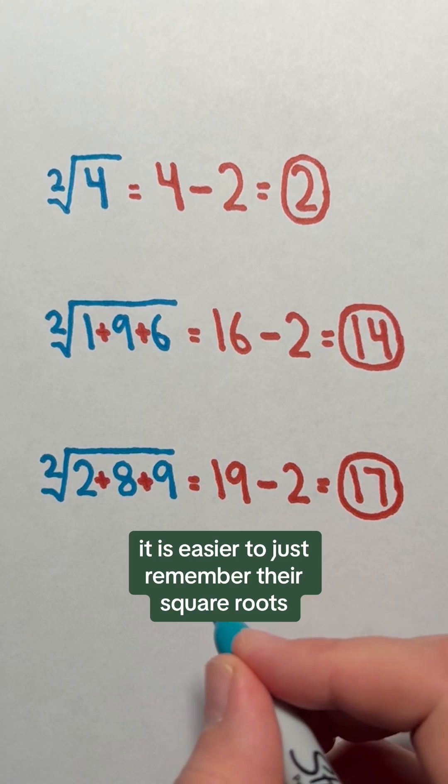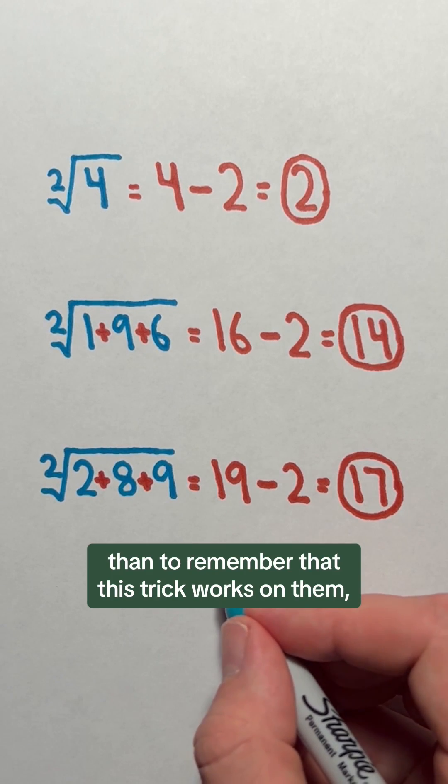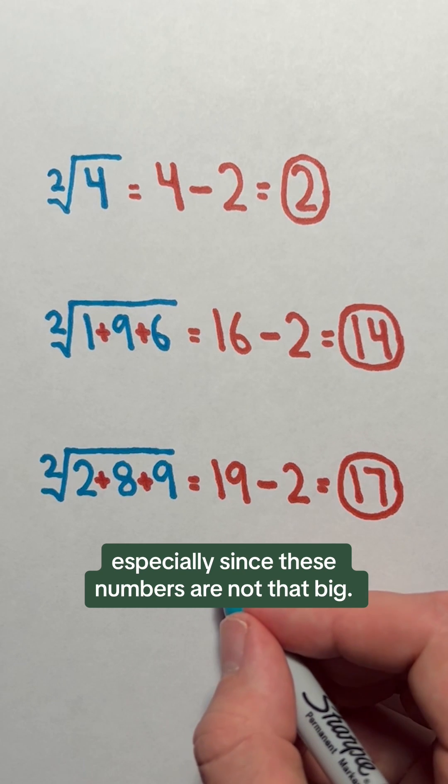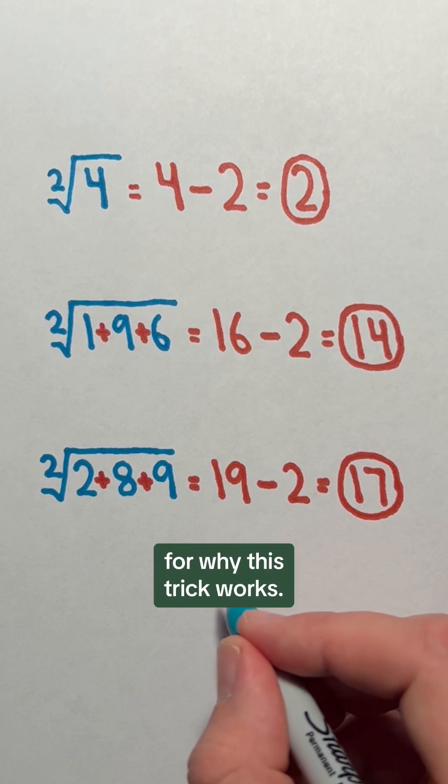With the numbers that this trick works on, it is easier to just remember their square roots than to remember that this trick works on them, especially since these numbers are not that big. In addition, there really isn't much of a mathematical explanation for why this trick works.